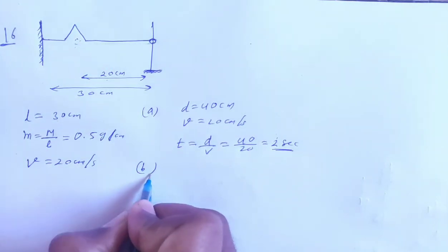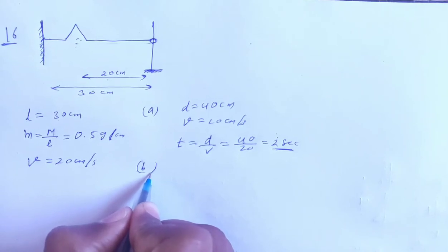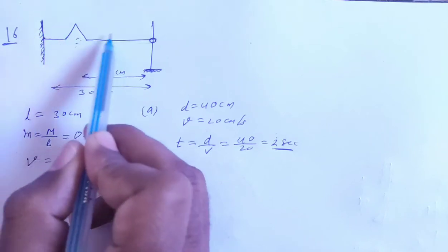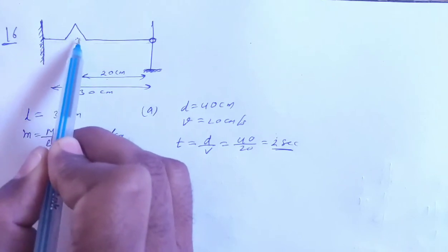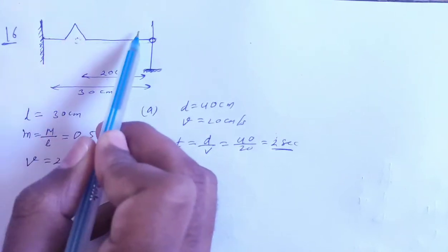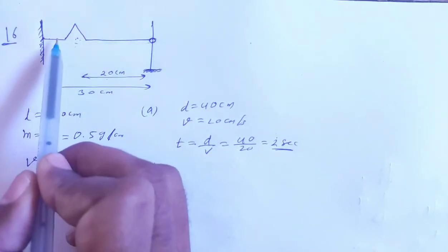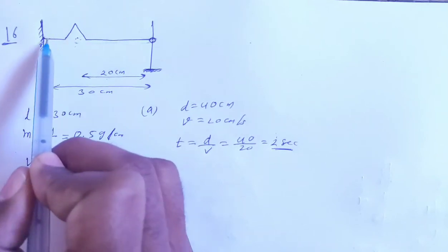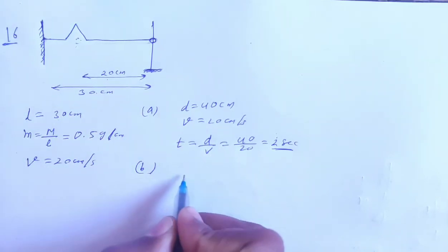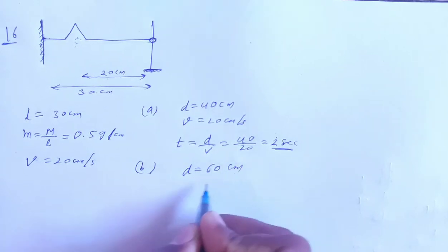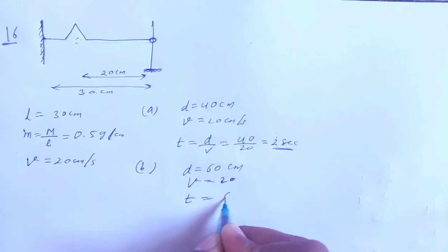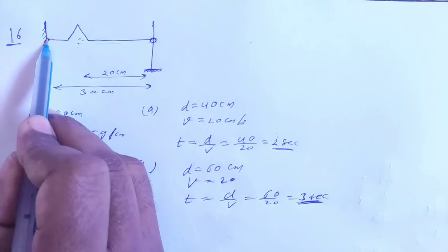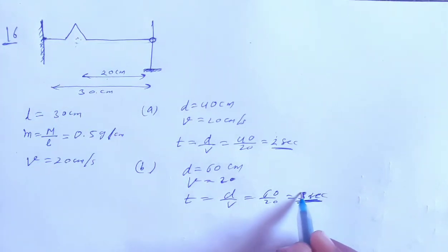Part B: the shape of the string changes periodically with time — find the time period. The shape periodically changes as the pulse travels the full string length of 30 cm and returns — 30 cm going and 30 cm returning = 60 cm total. Time = distance/speed = 60/20 = 3 seconds. So the string completes its cycle every 3 seconds.